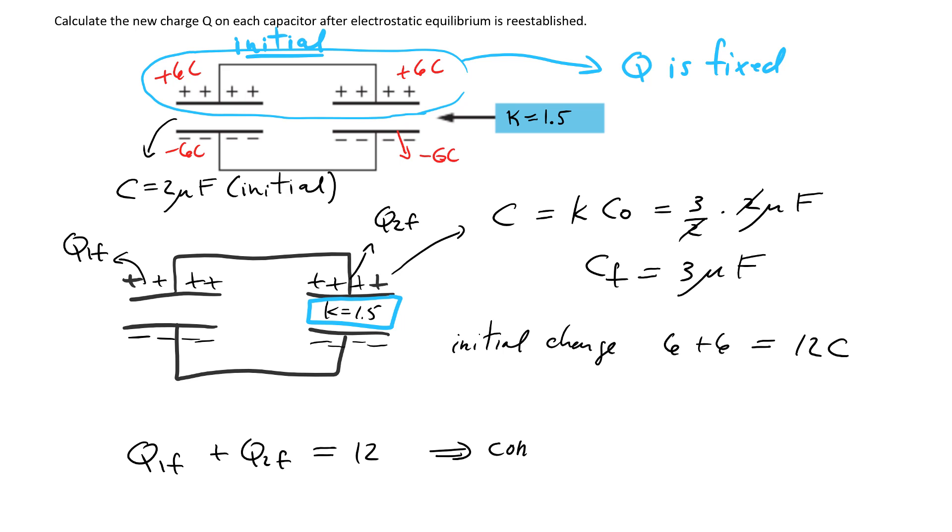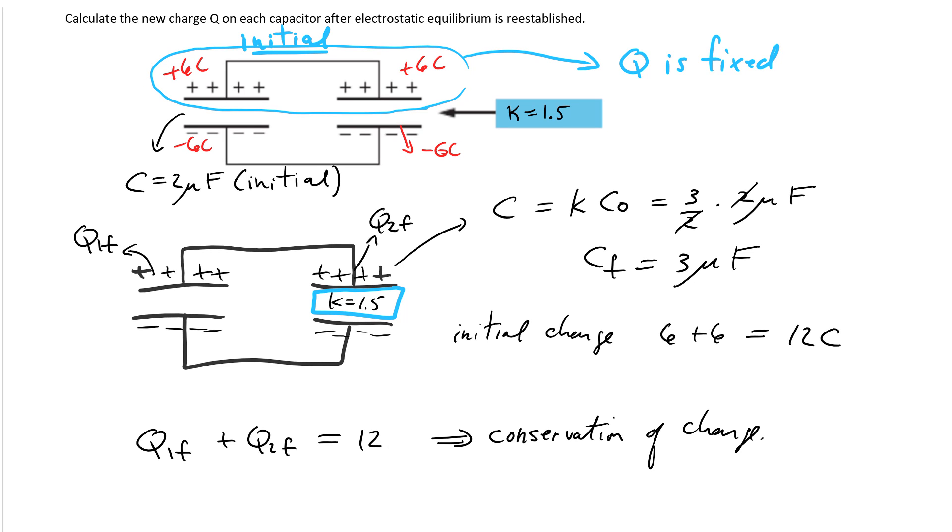Now we have one equation here, but unfortunately we have two unknowns. So we need to introduce at least one other equation if we're going to solve this problem and find the final charges on each capacitor.